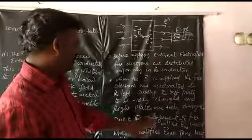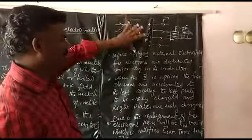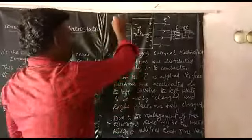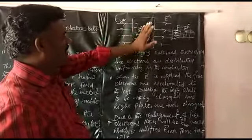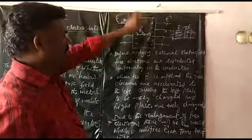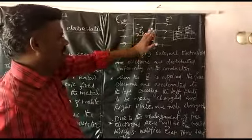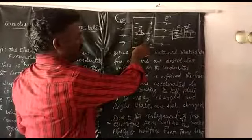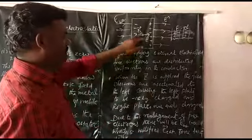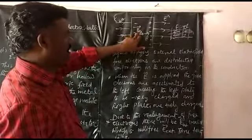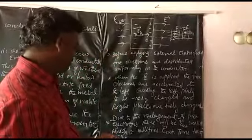Due to this re-alignment of the free electrons, there will be an induced electric field created inside the metallic conductor. The external applied electric field causes the re-alignment of electrons toward the left plate. The induced electric field inside the metal plate points from the positive charge to the negative charge — that is, from right to left. This induced electric field nullifies the external electric field until their values are equal.